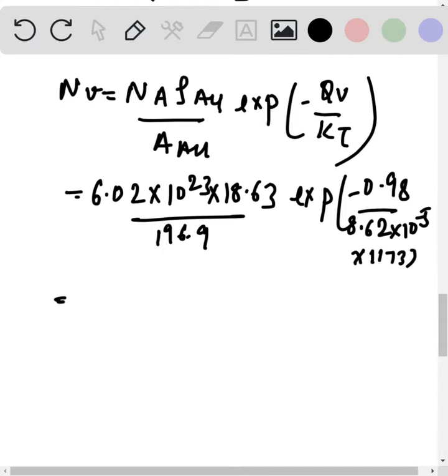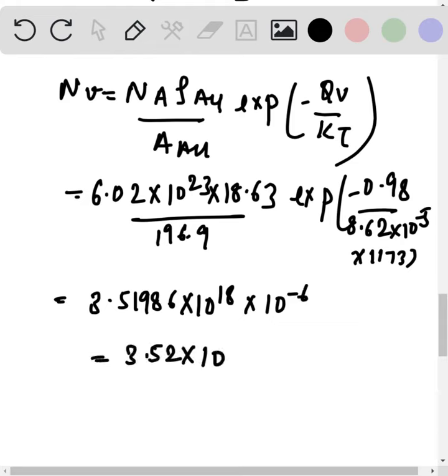Solving this we get it as 3.51986 into 10 to the power 18 into 10 to the power minus 6, which is equal to 3.52 into 10 to the power 24 per meter cube.